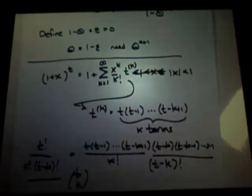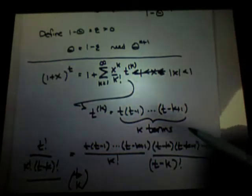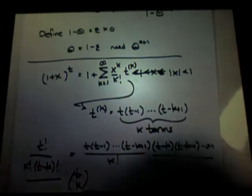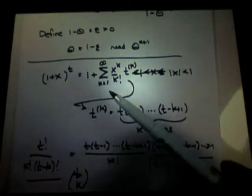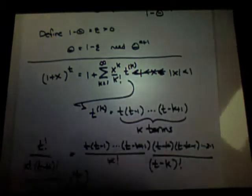So only in the case where t is a positive integer does this thing poop out and all the terms beyond are zero and it becomes a finite sum. If t is a fraction or a negative number, it just keeps on going.